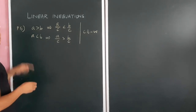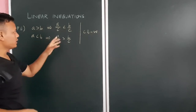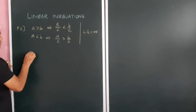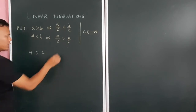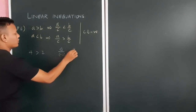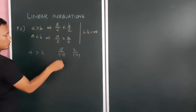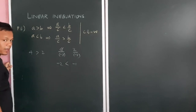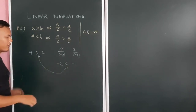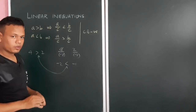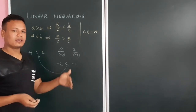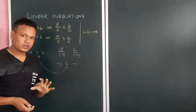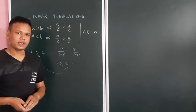Property 6 — the last property: if you divide both sides by a negative number, the sign reverses. For example, 4 > 2 — divide both sides by -2: 4 ÷ (-2) = -2 and 2 ÷ (-2) = -1. We know that -2 < -1, so the sign has reversed. These are the main properties you need to remember. If you are comfortable with these, our work will be very simple. In the next class, we will see the exercise. Thank you very much.